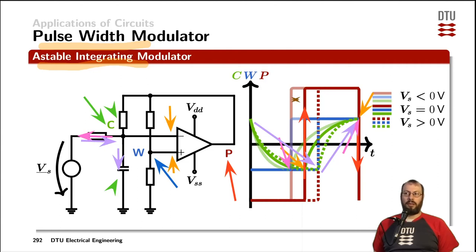Through that extra voltage source, we now started modulating the pulse width of the output signal of the comparator.